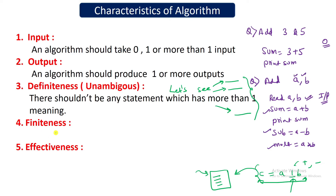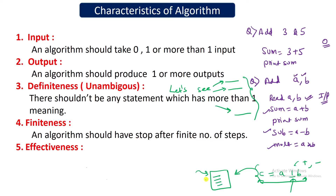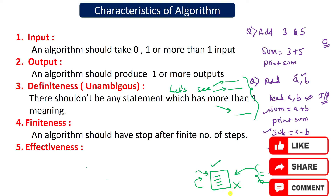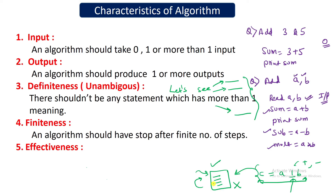The fourth property is finiteness. Your algorithm should stop after a finite number of steps. If your algorithm repeats some lines again and again without generating any output, it is not a good algorithm. For example, if you write 'repeat this statement' but do not mention how many times it should be repeated, the program will go into an infinite loop. That is not a good algorithm.